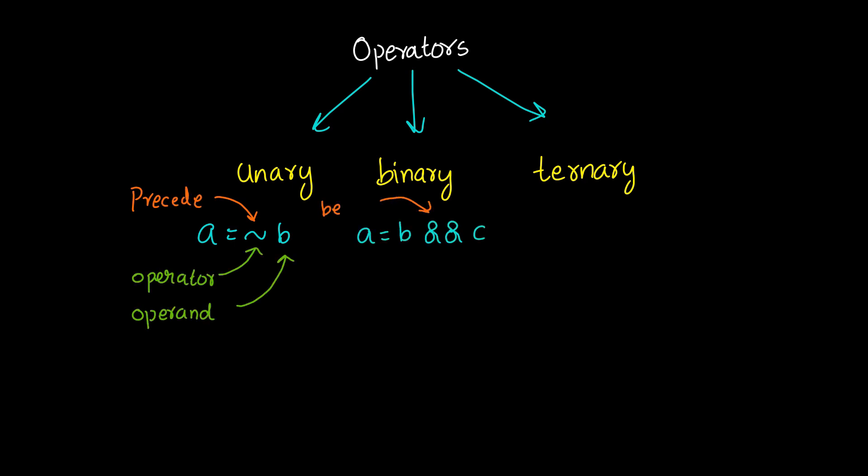Operators are of three types: unary, binary, and ternary. Unary operators precede the operand. Binary operators appear between two operands. Ternary operators have two separate operators that separate three operands.